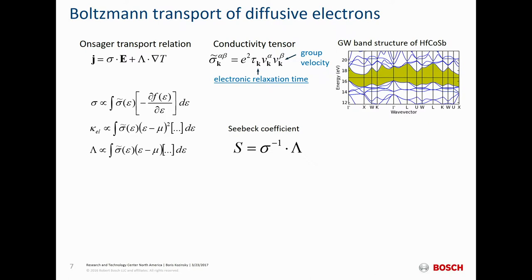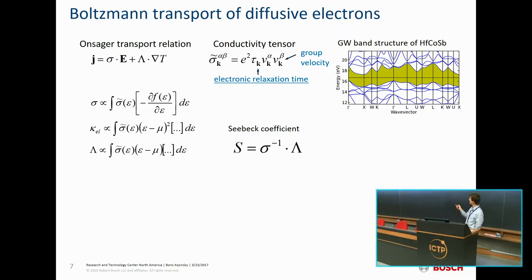The Boltzmann transport equation formalism has been applied many times before for thermoelectrics because some properties are easily computed, like the band structure. You can rely on GW-corrected band structure or just regular LDA or GGA, plug in the electron velocities — basically the slopes of the band structure — into the expression for electronic conductivity from the Boltzmann transport equation. You can do the same for the Seebeck coefficient, where the electron lifetimes cancel out to first order, but they don't cancel in the electronic thermal conductivity and electrical conductivity.